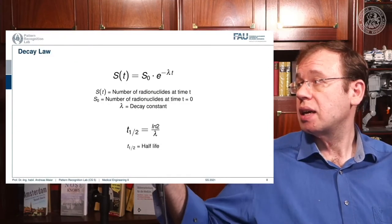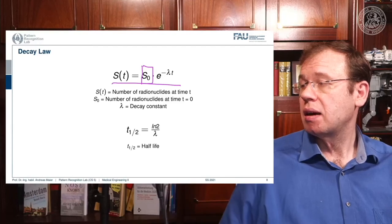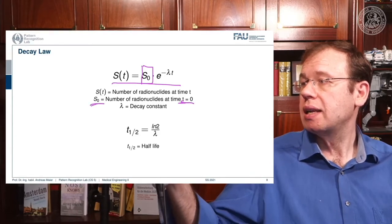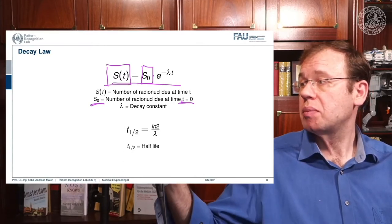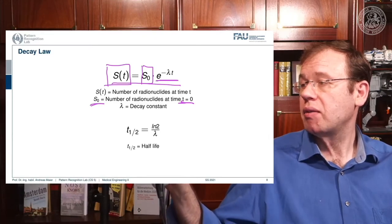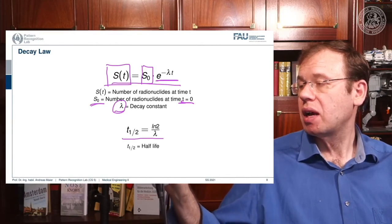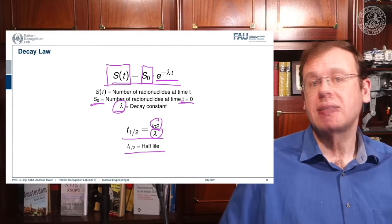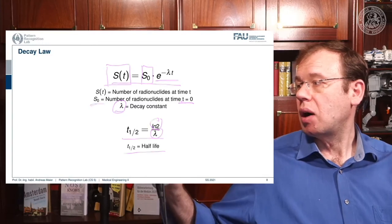If you have such an isotope, it will follow the decay law. The number of radionuclides at initial time t0 is N0, and the number still present can be determined by an exponential decay law with lambda as the decay constant. From lambda, we can compute the half-life as the logarithm of two divided by lambda. This is the amount of time that needs to pass for half of the radionuclides to still be present.